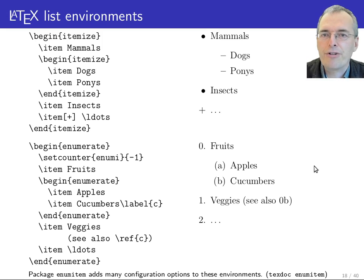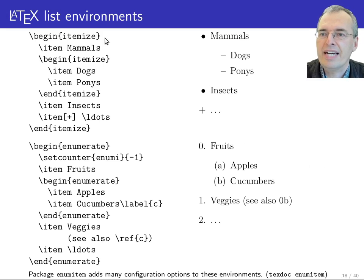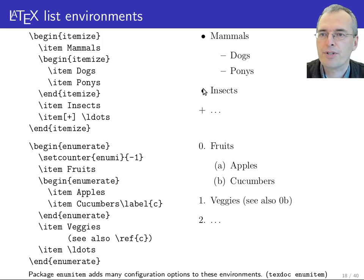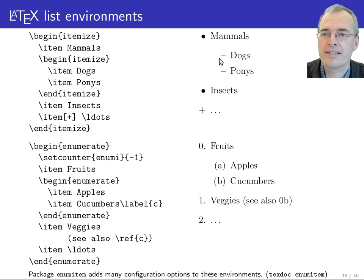To make bullet item lists, you use the itemize environment. Inside the itemize environment, backslash item starts a new paragraph indented with a bullet in front of every item. You can nest itemize environments and LaTeX will automatically choose another type of bullet at each level.